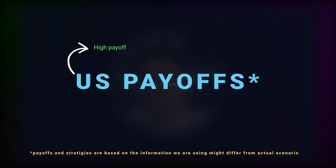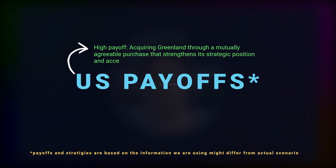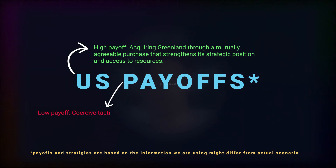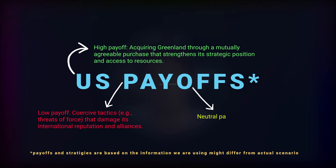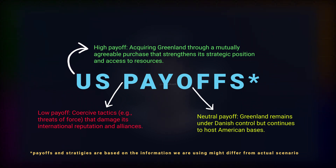U.S. payoffs: High payoff — acquiring Greenland through a mutually agreeable purchase that strengthens its strategic position and access to resources. Low payoff — coercive tactics, threats of force that damage its international reputation and alliances. Neutral payoff — Greenland remains under Danish control but continues to host American bases.